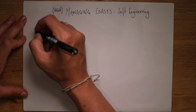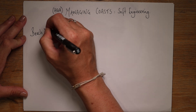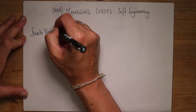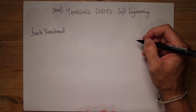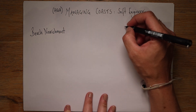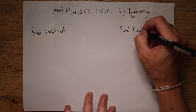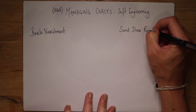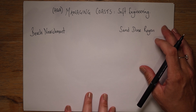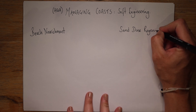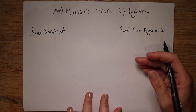We are going to look at something called beach nourishment, and we're also going to have a look at sand dune regeneration. These two are really important types of soft engineering, and they are also enough to get you easily into a six marker.